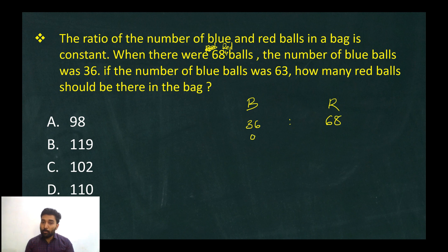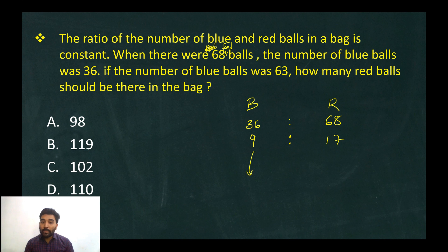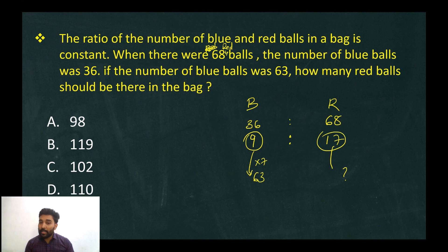If the number of blue balls is 63, using the constant ratio of 9 to 8: blue balls are 63, which is 9 times 7, so red balls are 8 times 7, giving 56. The ratio holds at 9 to 8, and the answer gives approximately 60 red balls.